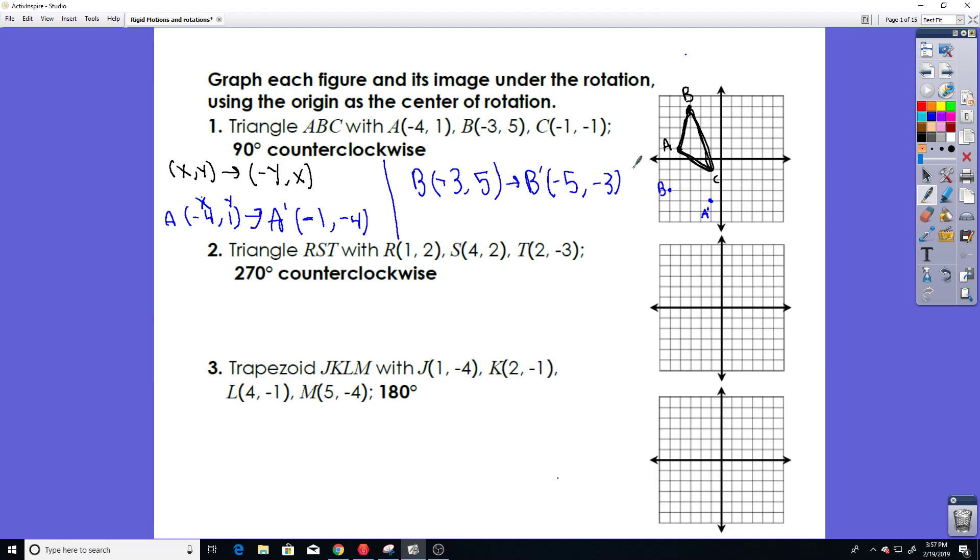And you should know that if you're doing a 90 degree rotation, wherever your point was, whether if it's in this quadrant right here, this would be the second quadrant, it's going to move one quadrant over into the third quadrant. That's how you can tell if you're doing it right.